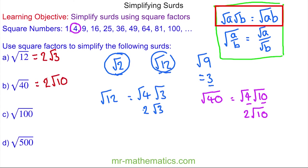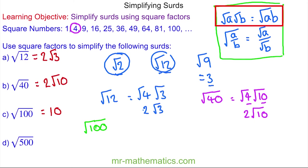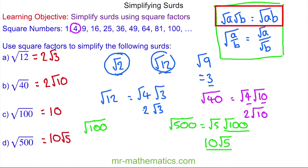For question c, we have the square root of 100. This is not a surd because the square root of 100 simplifies to 10. Now try simplifying the square root of 500 — you can pause the video and resume when you're ready. The square root of 500 is the square root of 5 multiplied by the square root of 100, and we know the square root of 100 is 10, so we have 10 root 5.